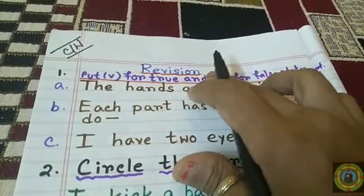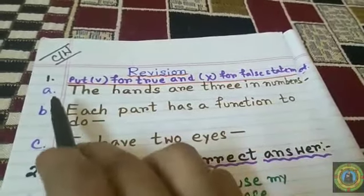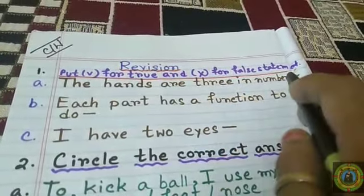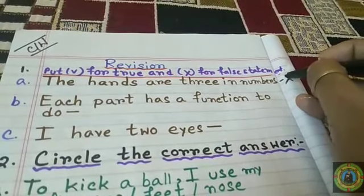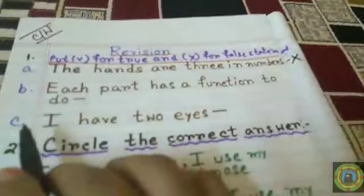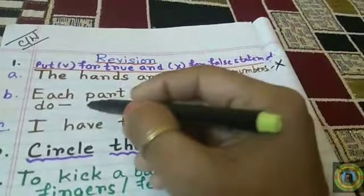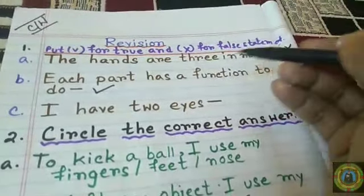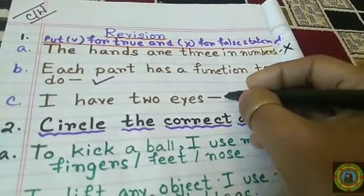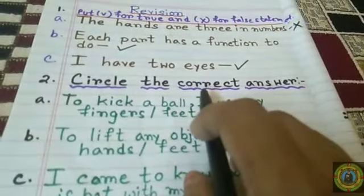Question 1: Put a tick for true and a cross for false statements. Question A: 'The hands are three in number.' We have two hands, so put a cross. Question B: 'Each part has a function to do.' Yes, each part has a function in our body, so put a tick. Question C: 'I have two eyes.' We have two eyes, so put a tick.